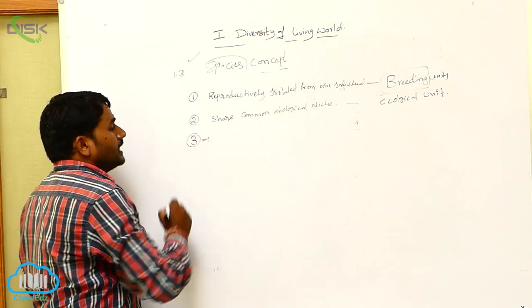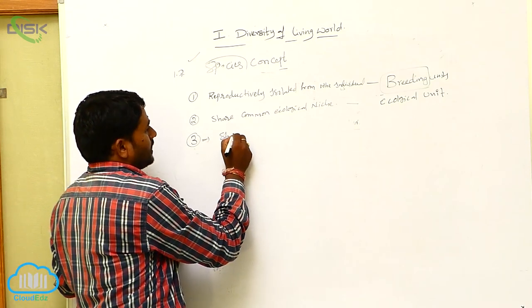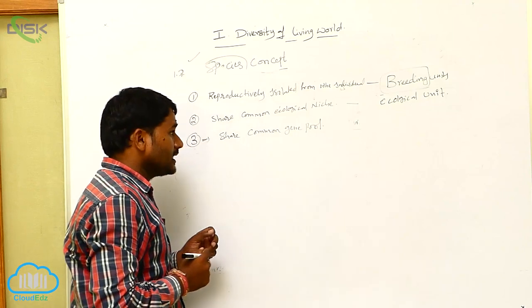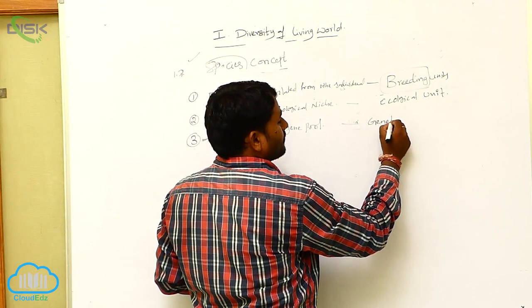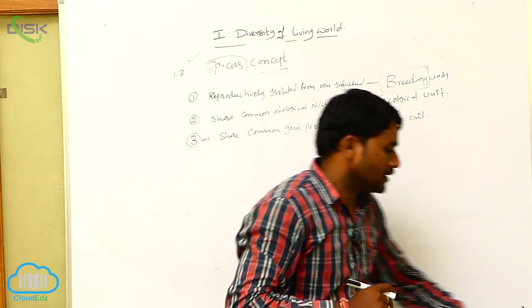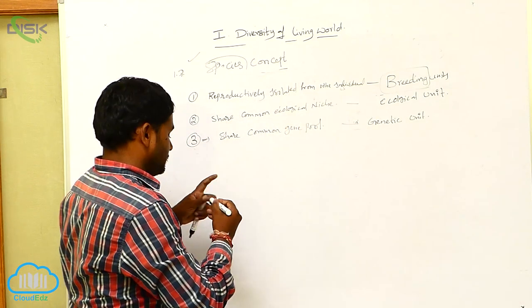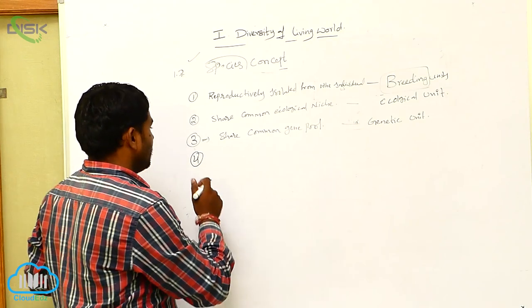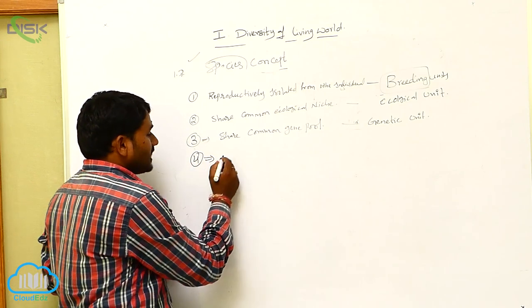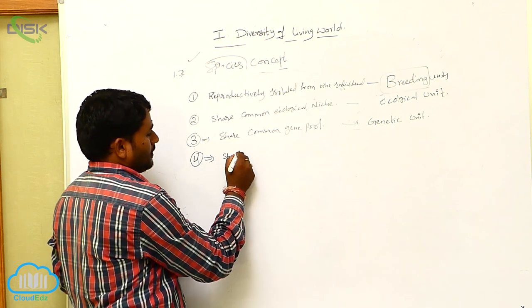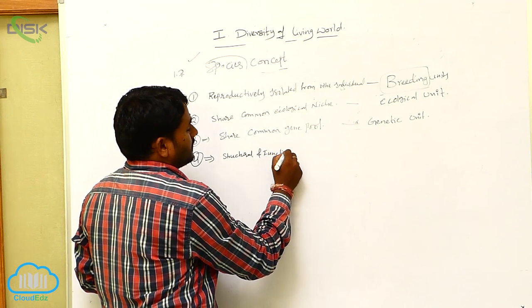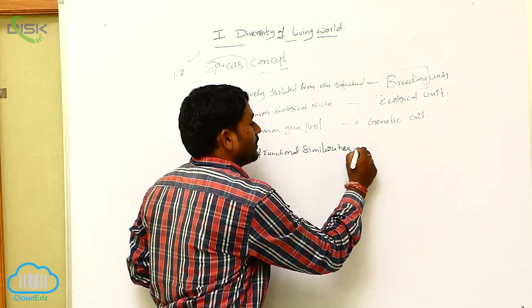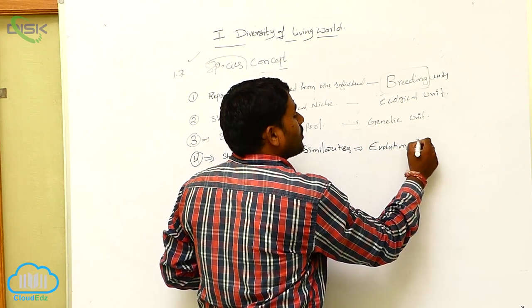They share a common gene pool — that is the genetic unit. So generally they have structural and functional similarities — that is the evolution unit.